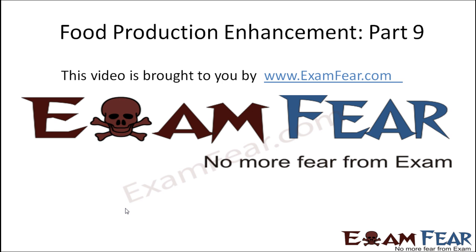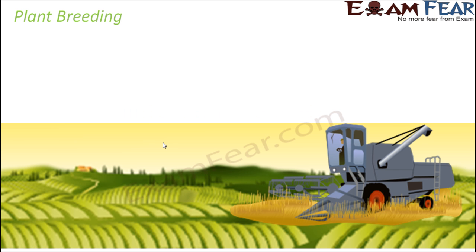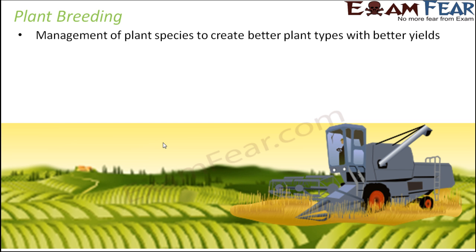Hello friends. This video on food production enhancement part 9 is brought to you by examfio.com. Now that we have discussed about the various techniques both natural as well as artificial for animal breeding, on similar lines we are going to discuss about plant breeding. Plant breeding is the management of plant species to create better plant types with better yields, with our focus being to enhance food production from plants.